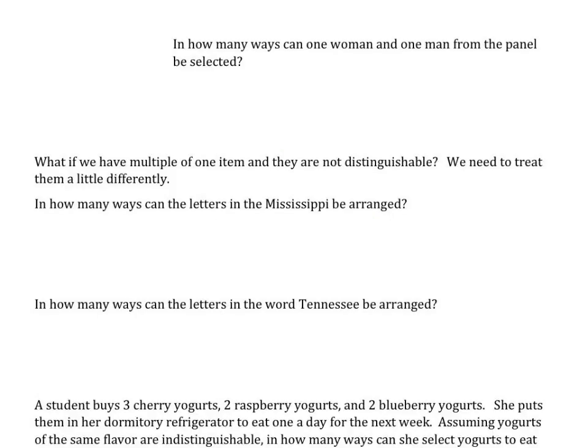In how many ways can one woman and one man from the panel be selected? We have four options for women and three options for men, giving us a total of 12 combinations of one woman and one man to be selected.